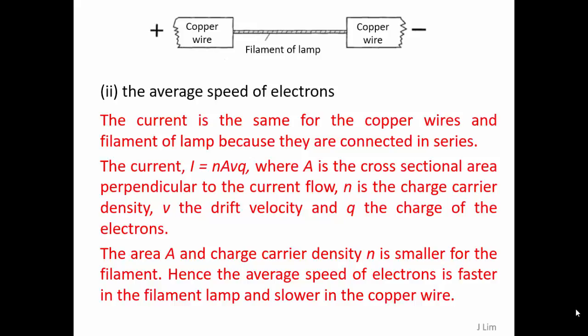The area A and charge carrier density n is smaller for the filament. Hence, the average speed of electrons is faster in the filament lamp and slower in the copper wire.